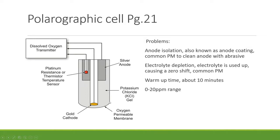Polarographic cells have a warm-up time of about 10 minutes, which may be considered a limitation. Their operating range is 0–20 parts per million. Pay attention to this number because the galvanic cell operates at a significantly different range.